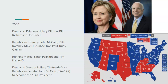In the Democrat primary, Hillary Clinton, Bill Richardson, and Joe Biden are the top three candidates. Clinton says: I'm from the South, pick me, you need me to win this election and get Republicans out of office. In the Republican primary, John McCain, Mitt Romney, Mike Huckabee, Ron Paul, and Rudy Giuliani are the top contenders. McCain wins — considered the safe bet. Running mates are Sarah Palin for McCain and Tim Kaine for Clinton. In a landslide, Democrat Senator Hillary Clinton defeats Republican Senator John McCain 396 to 142 to become the 43rd President and the first female president ever.